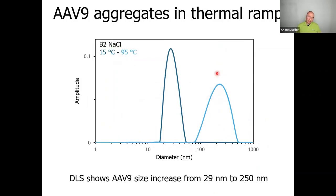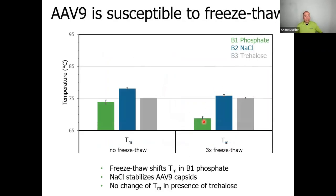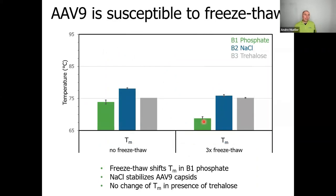Here is a DLS readout for AAV9. We start with an AAV prep at around 29 nanometers, which is typical for an AAV diameter. After heating to 95 degrees, the diameter increases to 250 nanometers — almost 10 times larger — and the peak is much wider, indicating increased polydispersity. This aggregation is a typical effect of a temperature gradient on a protein, and the DLS here is an orthogonal readout to what we showed for static light scattering.